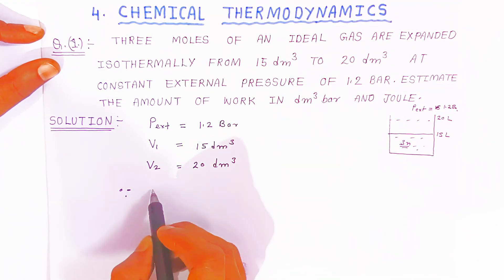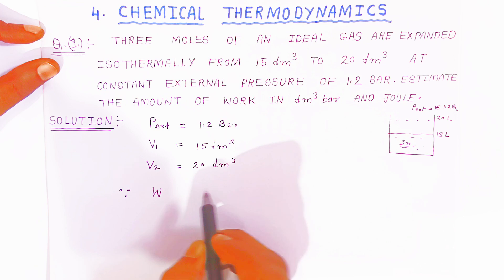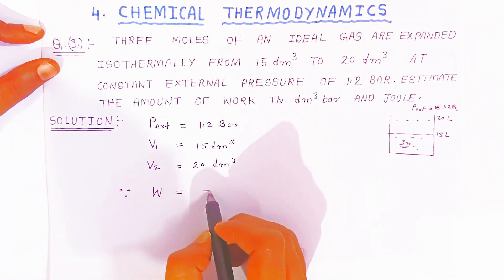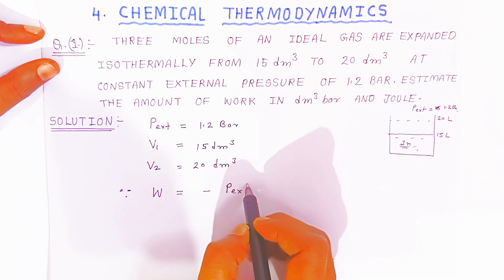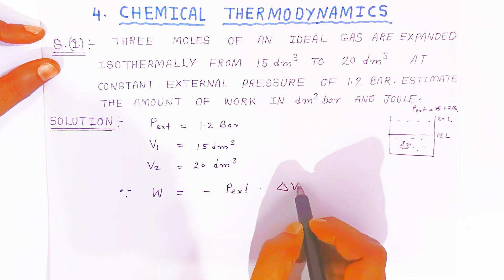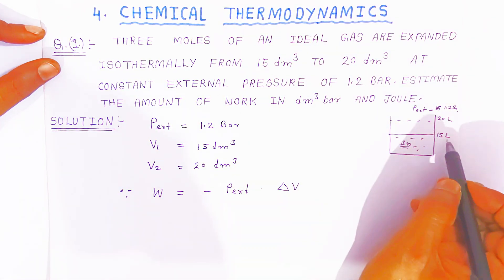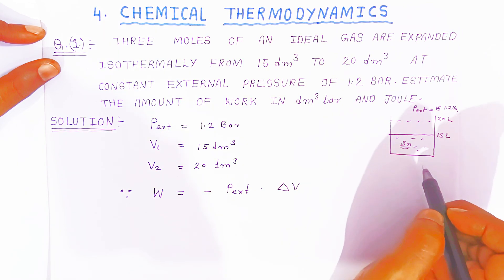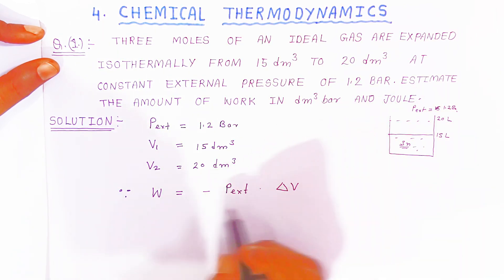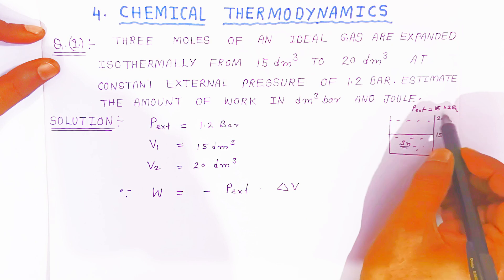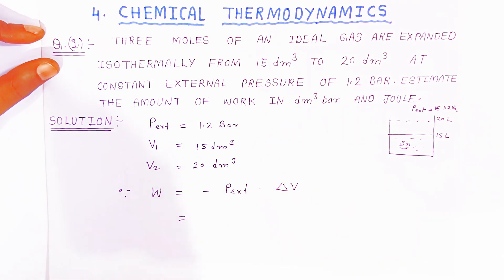We have to calculate the work done. Since students, you know the formula without this formula you are not able to calculate the work. So work students here we are writing minus p external into delta V. There is a displacement distance from 15 liter to 20 liter, so work will be done. So here students against the external pressure that is 1.2 bar is given.